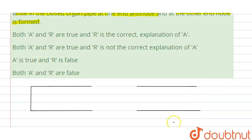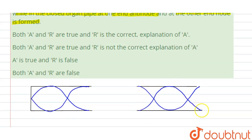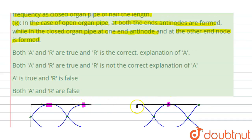If we draw a wave, the waveform is like this in the case of a closed organ pipe — the wave travels in this way inside a closed organ pipe. And in the case of an open organ pipe, the wave travels in this way. These are the anti-node points and these are the node points.